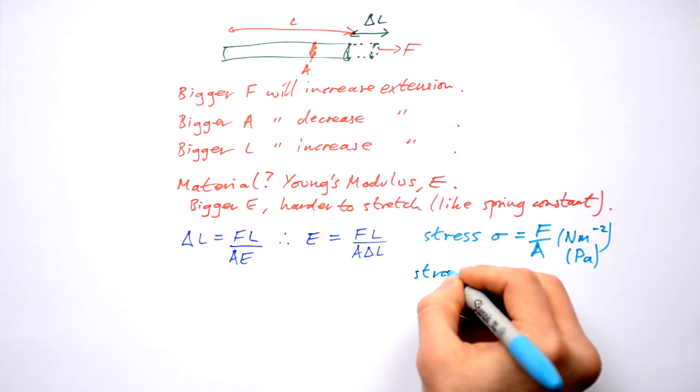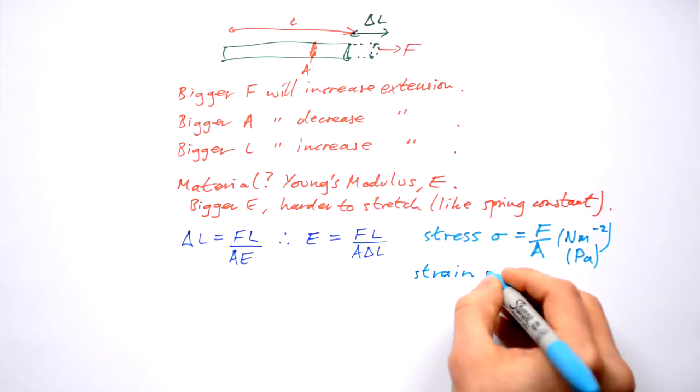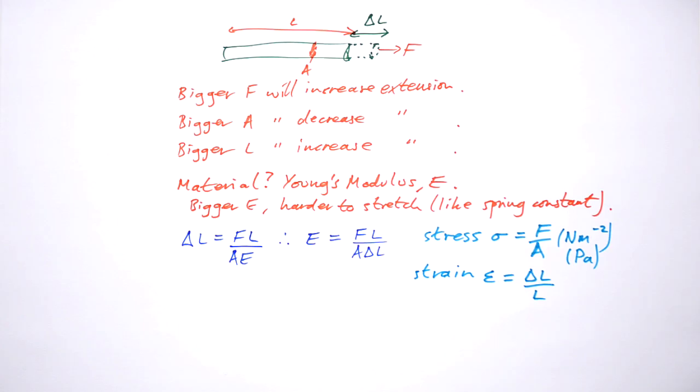And we have this as well, strain. Give that the symbol epsilon, not emf. That's the ratio of how far a material has stretched compared to its original length. It doesn't have a unit because they're both meters.